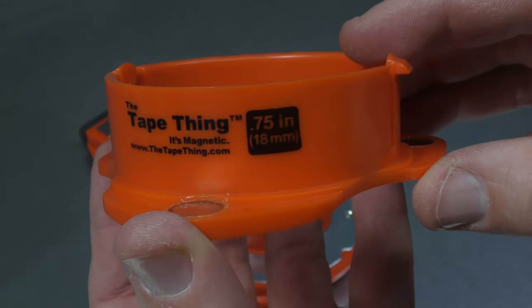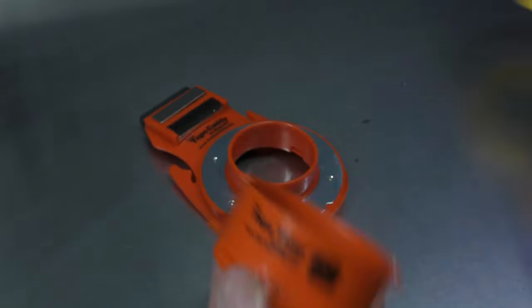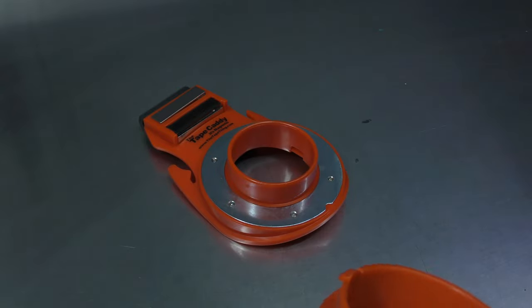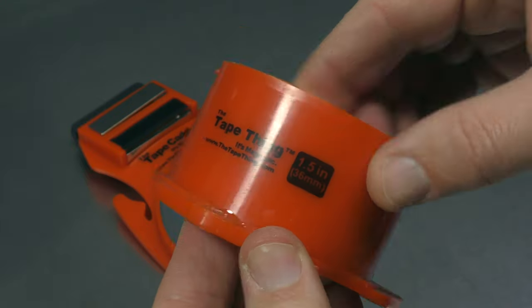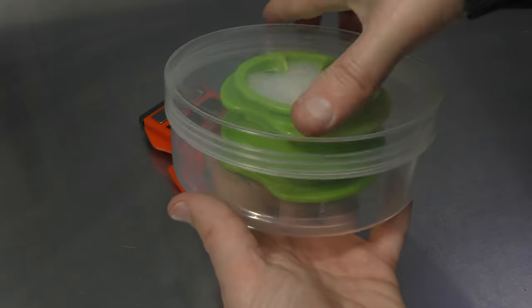You can see this one is 0.75 inches or 18 mil so perfect for your smaller masking tapes. You can also get the 1.5 inch or 36 mil for your larger tapes and in this container here we have a few different options.